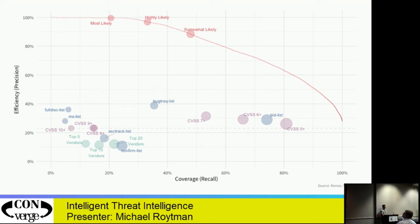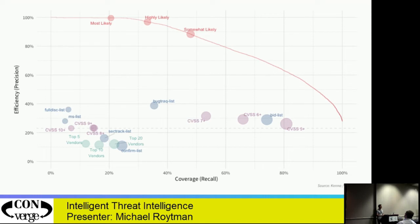Think about it this way: if I've got 100 machines and one of them is infected — which is probably the case, maliciousness is rare — and every day I walk up to my CISO and say 'nothing's infected,' my accuracy is 99% every time but I'm doing a terrible job. Accuracy is a terrible metric, which is what CVSS really tries to get us towards. So we need to be efficient — when I make a prediction about something, it should be right. If I said let's remediate 10 machines and I think 10 are infected but only one really is, my efficiency is 10%.